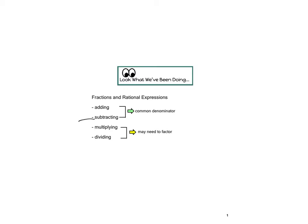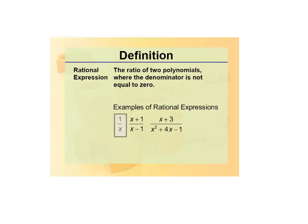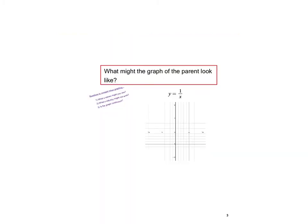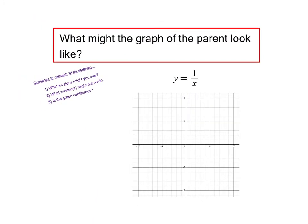A lot of our work up to this point in this unit has been around adding and subtracting, multiplying, and dividing rational expressions. With adding and subtracting, our main focus is that common denominator idea. With multiplying and dividing, our main focus is the need to factor and to simplify. All of these come from the idea of the parent being 1 over x, with the denominator not being equal to 0.